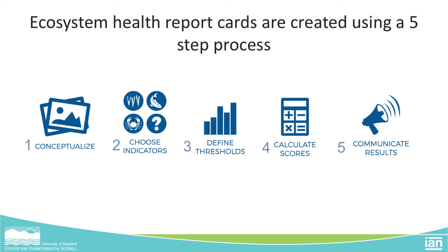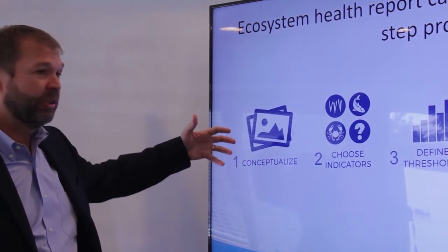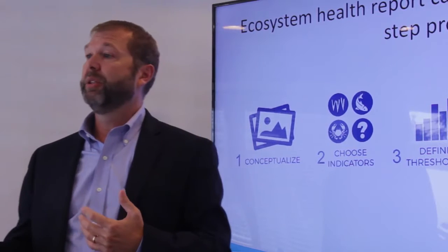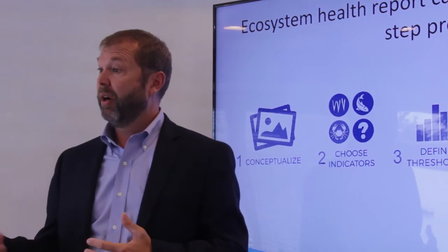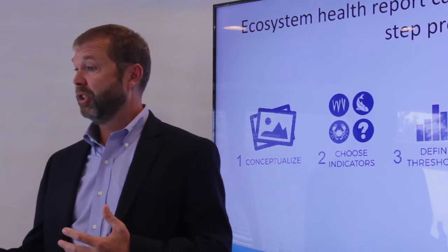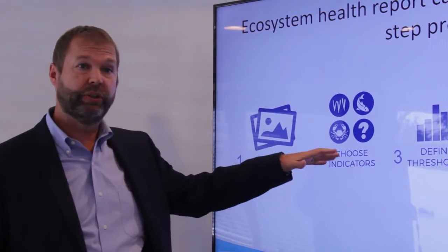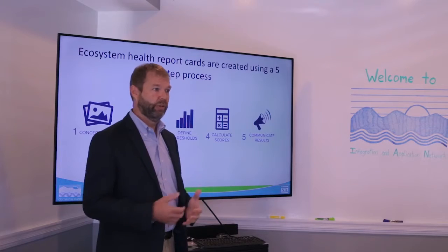As we've done more and more ecosystem health report cards around the world, we've developed a process of five steps for creating the report card. The first step is to conceptualize the problem — if we can understand what are the things we value in the system, what we care about, and what are the things that are driving the condition of those things, then we can start on the second step, which is choosing indicators — what can we do to measure those things?